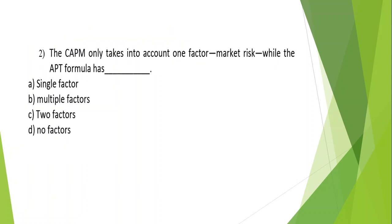Question 2: The Capital Asset Pricing Model only takes into account one factor — market risk — while the Arbitrage Pricing Theory formula has ___. Options: A) Single factor, B) Multiple factors, C) Two factors, D) No factors. The answer is Option B: Multiple factors.